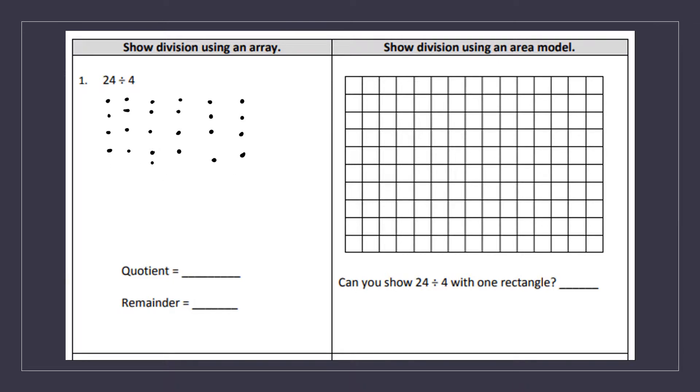One, two, three, four, five, six. So 24 divided by 4 equals 6. So my quotient is my answer in division. So six will go right there.